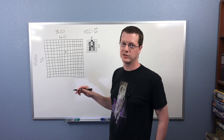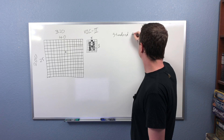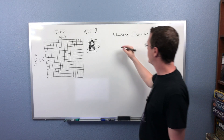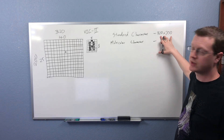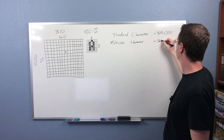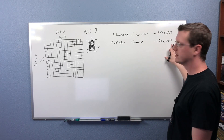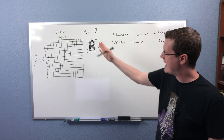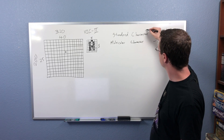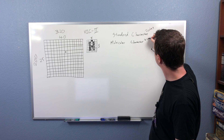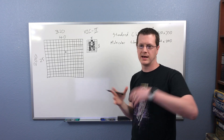There are a couple more modes. Standard character mode is 320 by 200, giving 40 by 25 characters. Then there's multicolor character mode at 160 by 200, which gives you 20 characters across by 25 down — it halves this dimension and doubles up the characters. Standard mode gives you two colors per cell; multicolor mode gives you four colors. It halves the number of characters you get, but doubles the number of colors.